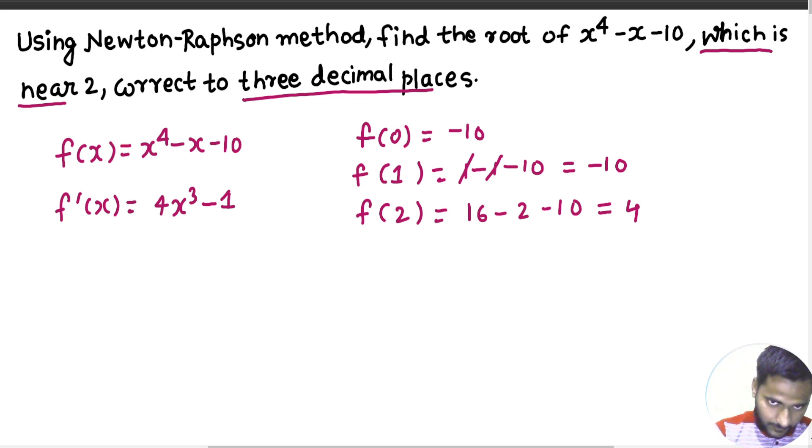So root is lying between 1 and 2. So to be more precise, let's find the value at 0.5. So value at 0.5 will be 0.5 power 4 minus 0.5 minus 10. So this is going to be minus 10.4375.